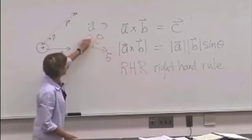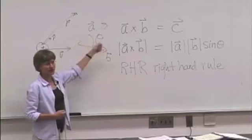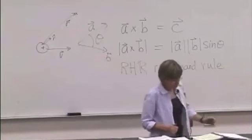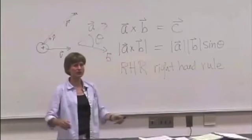The angle between them is always smaller than 180 degrees. You never go, you always go the short way. Okay, so that's the right-hand rule, and you have to be able to do it that way.